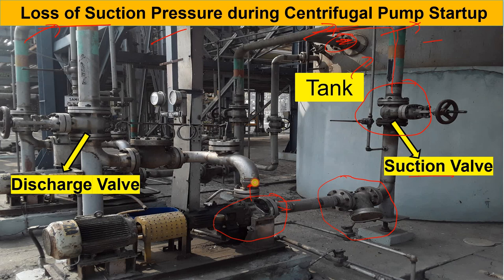After the pump, this is the expander. Then there is the arrangement for your pressure gauge (PG), from where you can check your discharge pressure. This one is your NRV (non-return valve), and after that this is your discharge valve.